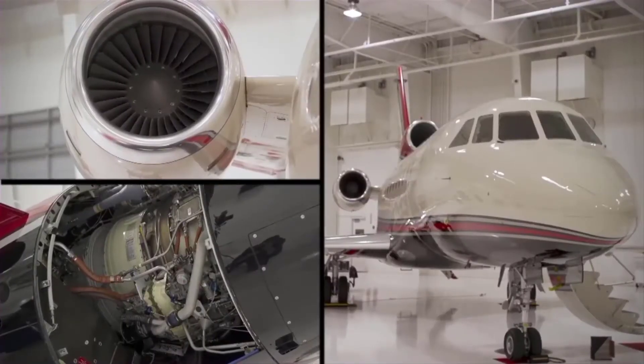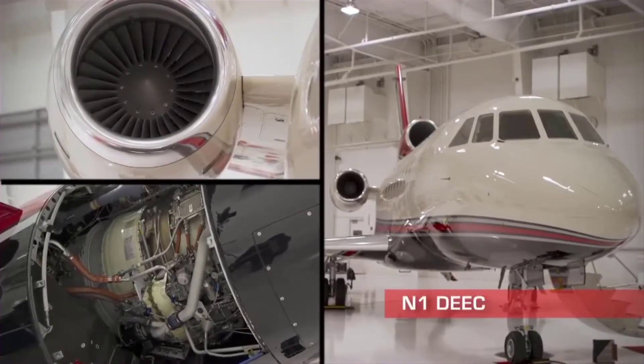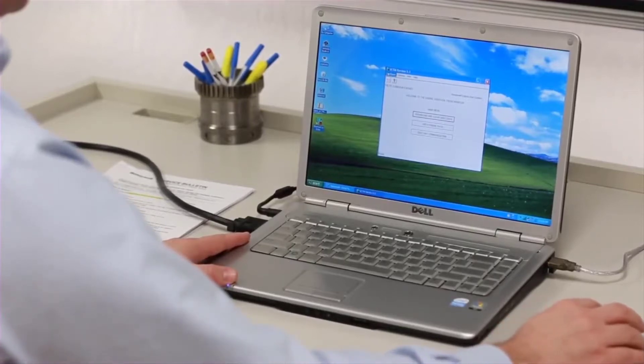The Honeywell Engine Condition Trend Monitoring System consists of an N1 DEC with embedded trend monitoring software, a personal computer with TFE 731 ECTM software, and access to a central data processing center for advanced trending features.